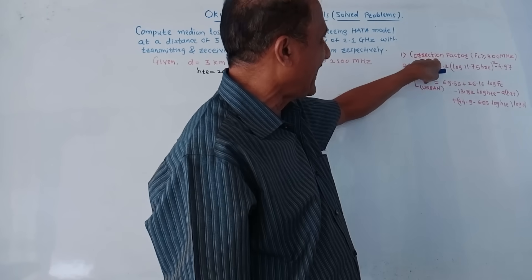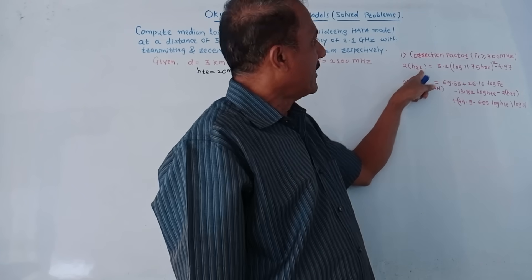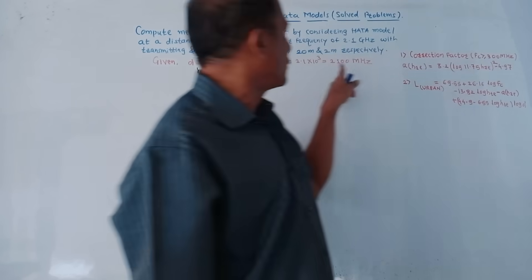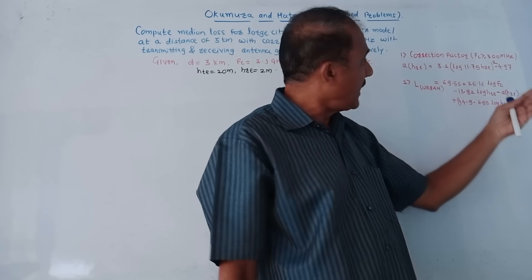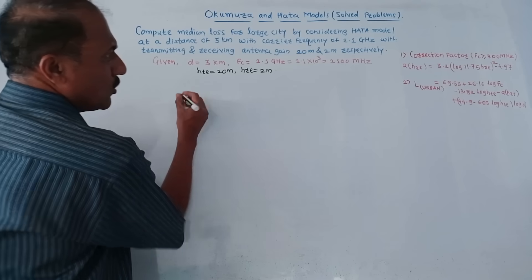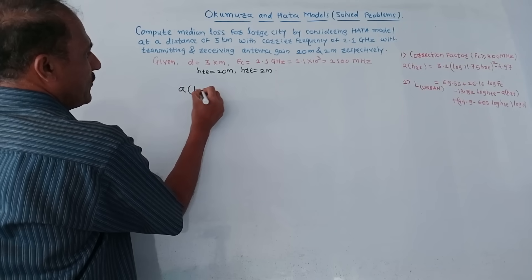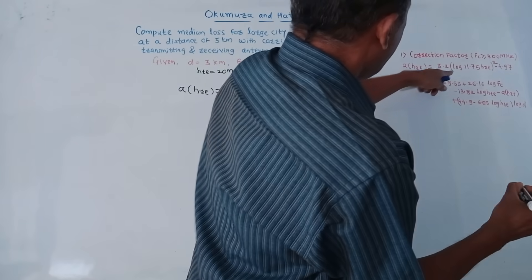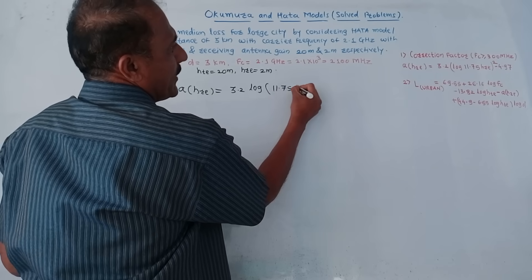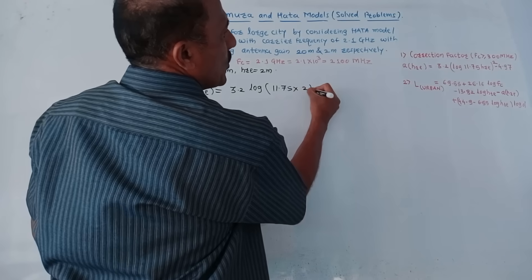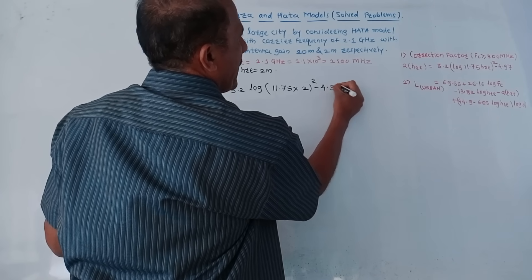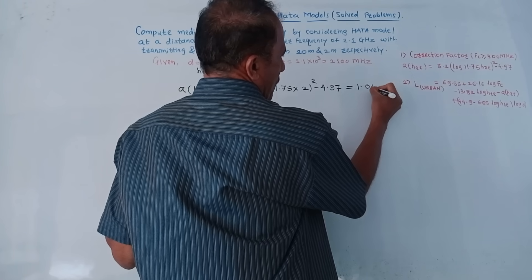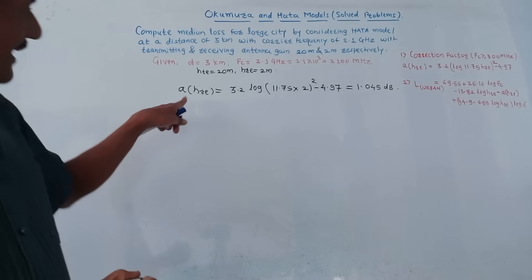First, calculate the correction factor A(HRE). This formula applies when Fc ≥ 300 MHz — and our frequency is 2100 MHz, well above that threshold. So: A(HRE) = 3.2 × [log(11.75 × HRE)]² − 4.97 = 3.2 × [log(11.75 × 2)]² − 4.97 = 1.045 dB.